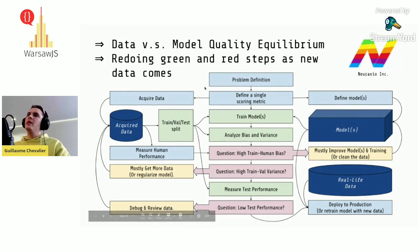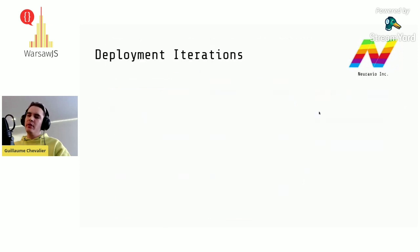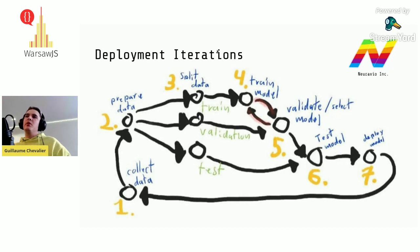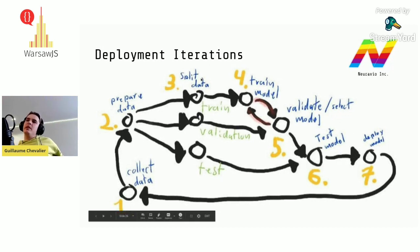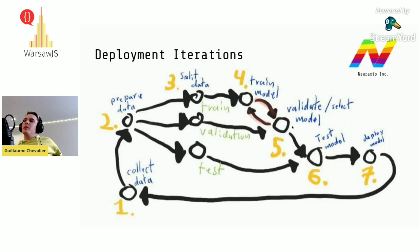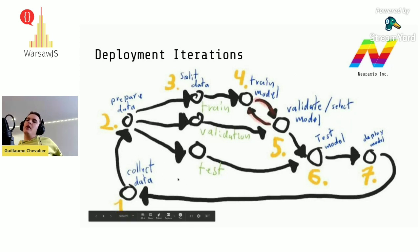Keeping data and model quality in equilibrium and redoing the data and modeling steps as new data comes in is a must. The deployment loop: collect data, prepare it, split into train/validation/test, train the model with the AutoML loop, validate and select the best model, test it, deploy if it works, and restart with new data as you collect it. If you need better scores or your data drifts over time, retrain your model.